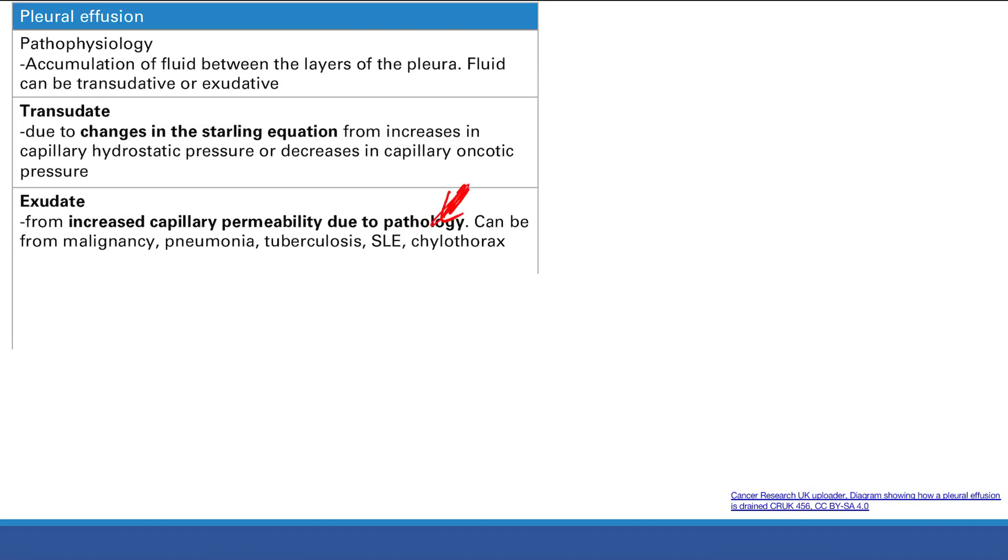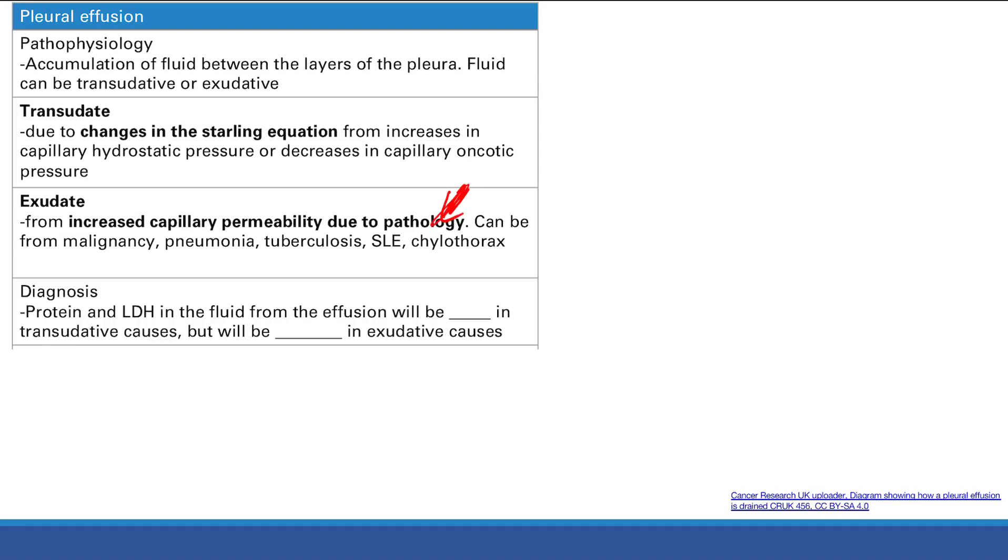these causes, they're all bad, but you want to know which one is which. The way you diagnose it is you get some of the fluid from the pleura and then you measure the protein and the LDH.